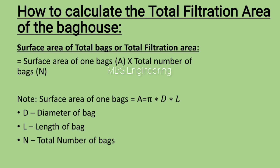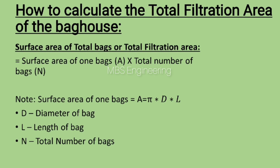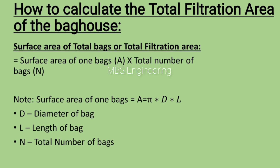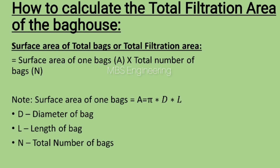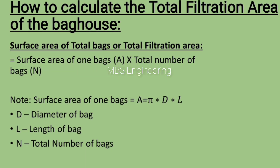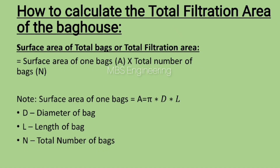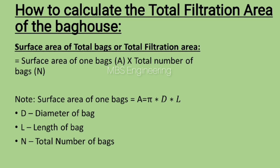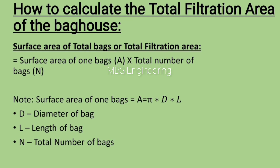Next, we understand how to calculate the surface area of one bag. The surface area of one bag equals π × d × l. In this equation, d is the diameter of the bag, l is the length of the bag, and n is the total number of bags.